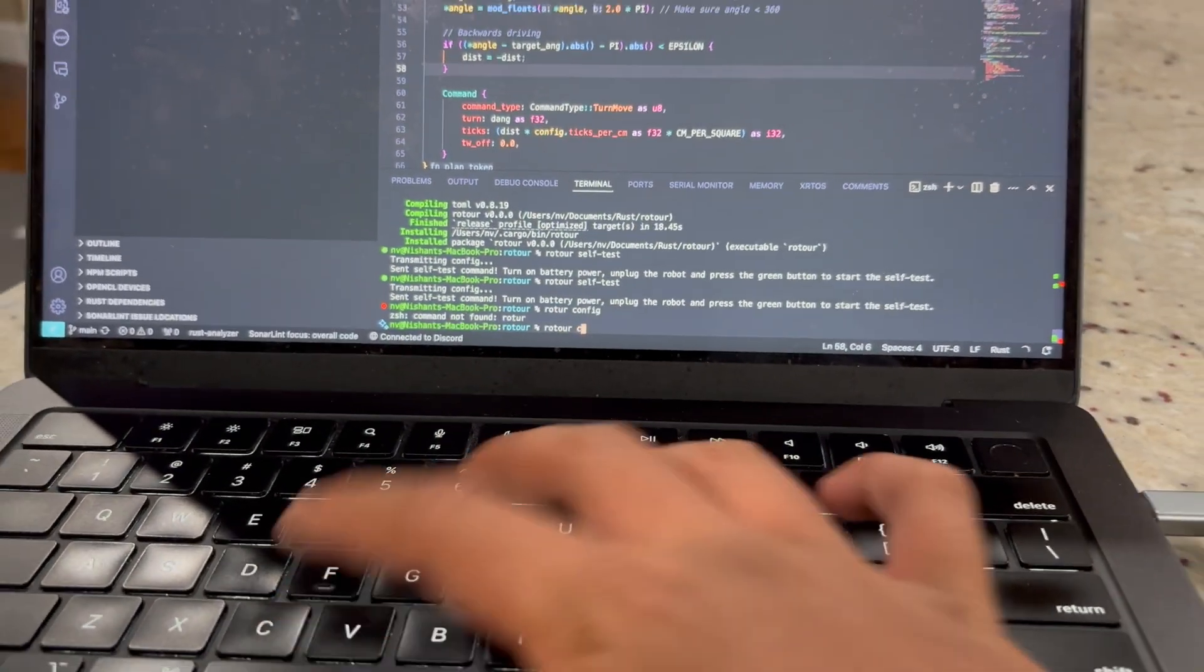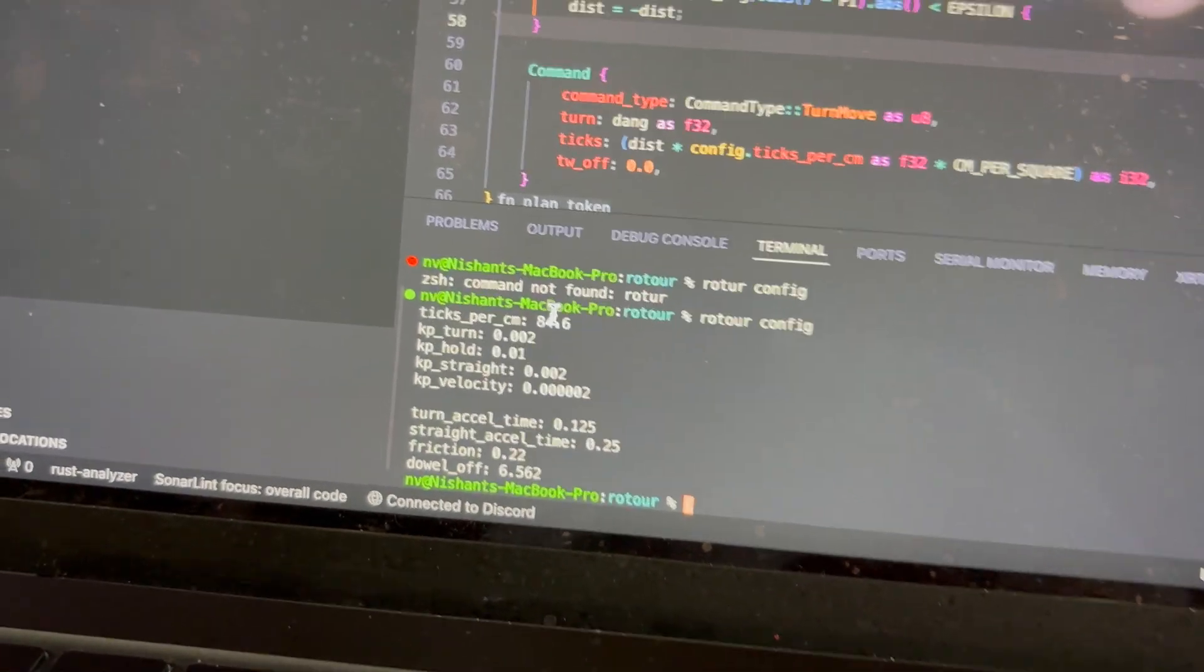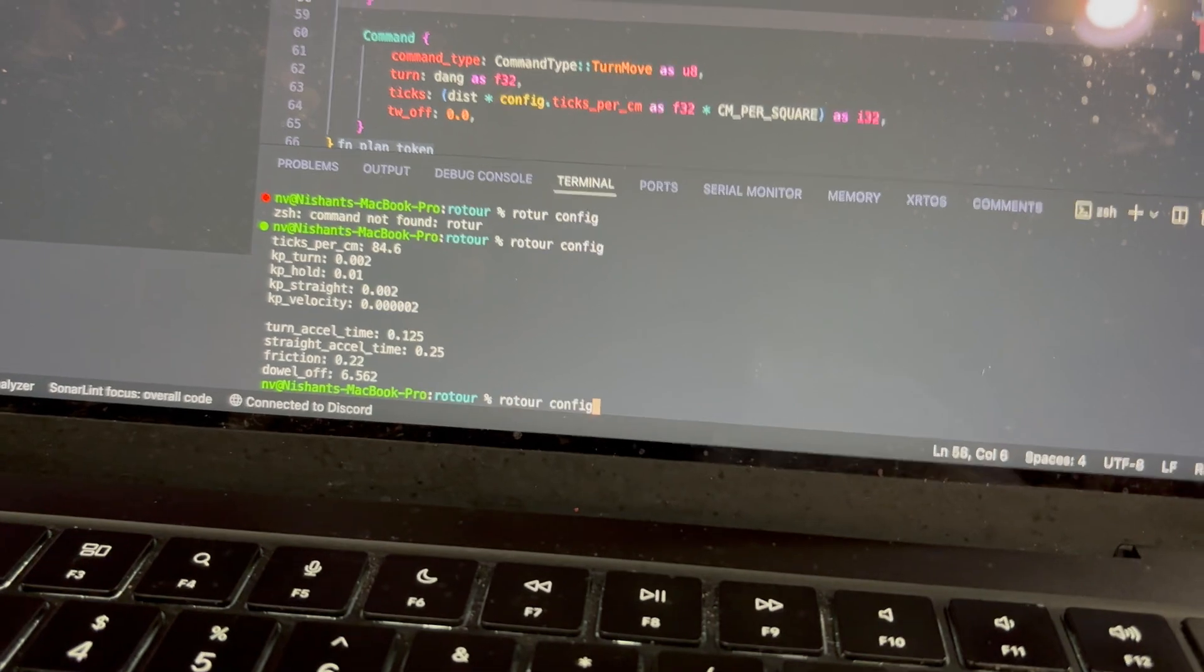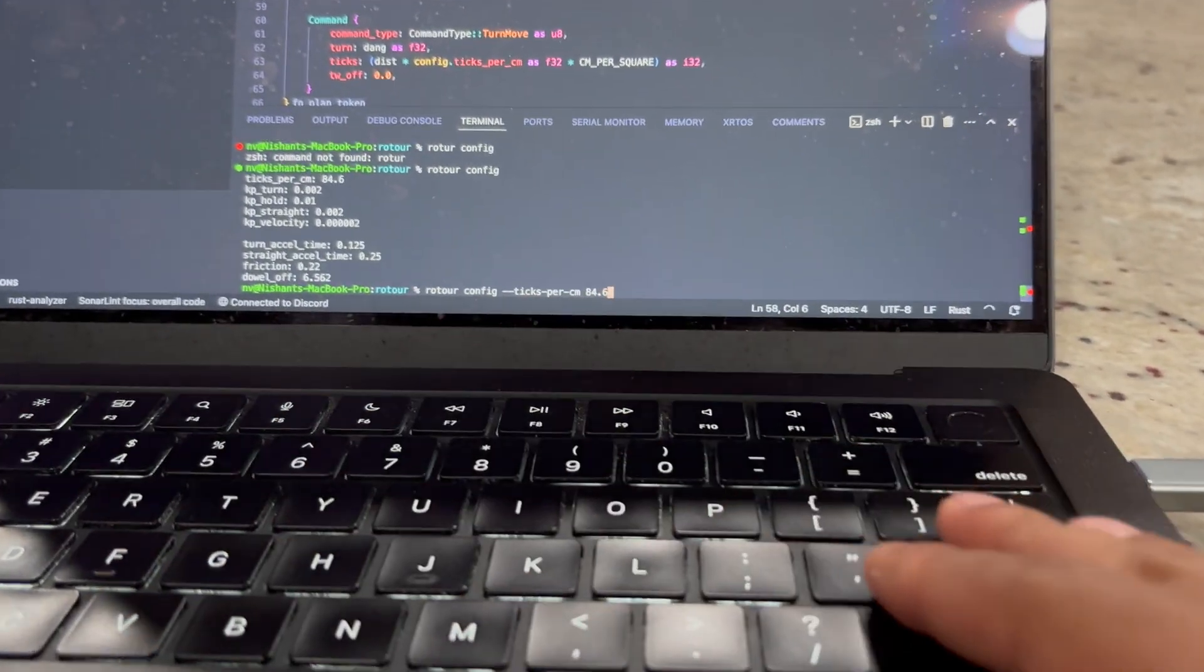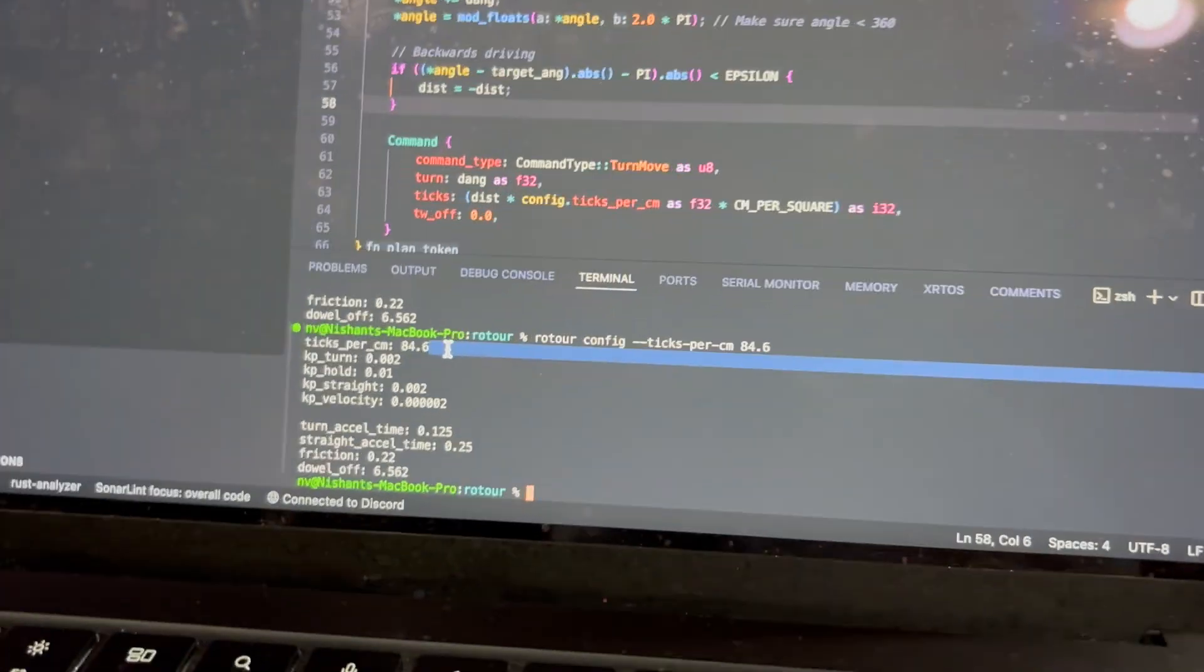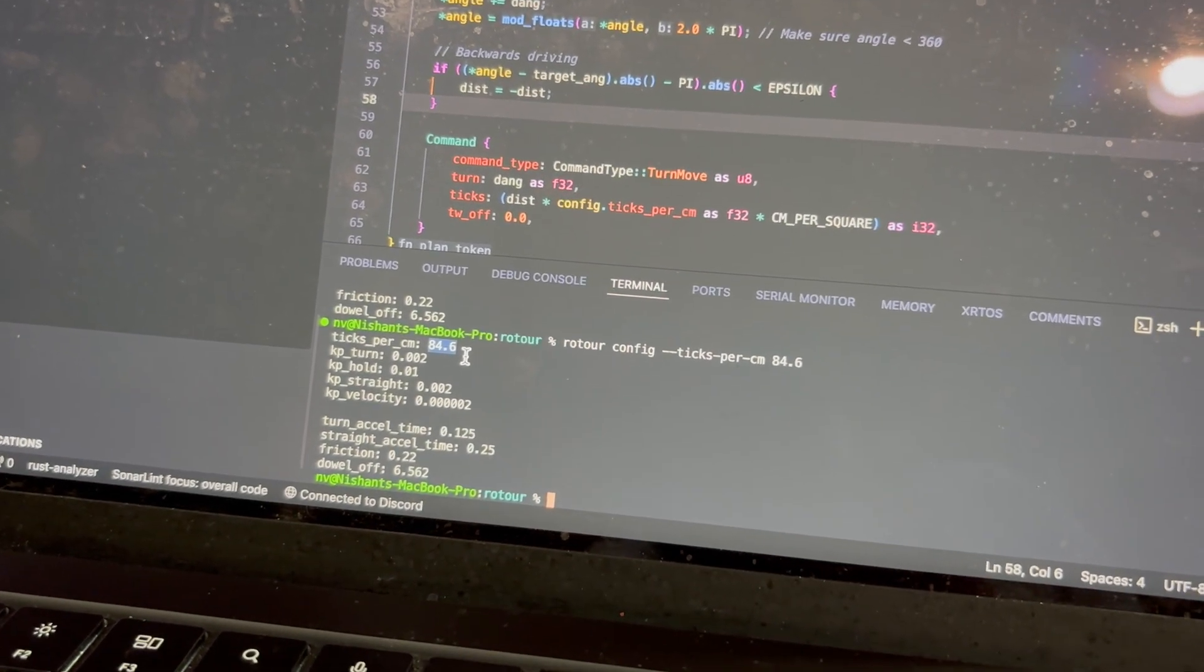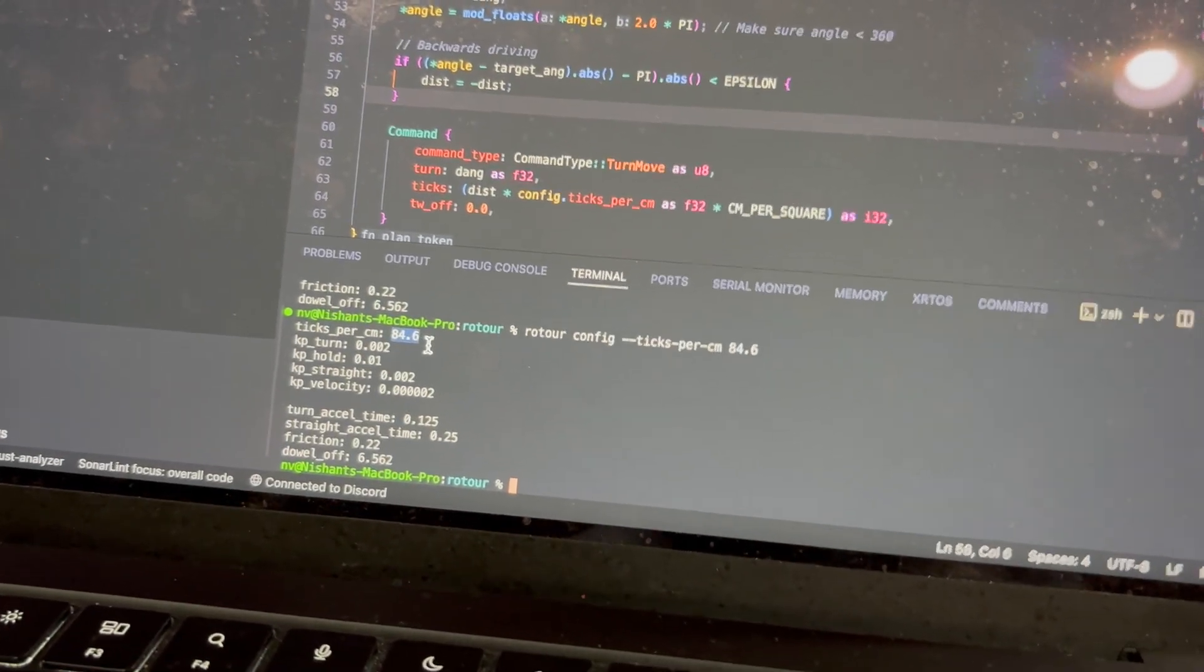Just measure how far it's gone. And essentially, now, if you run rotor config, you'll see that one of the numbers here is ticks per cm. So, you basically just take 10,000 and divide it by the number of centimeters it went to get the number of ticks per cm. And you just do dash dash ticks per cm. And then you would put in, for example, 84.6 and hit enter. So I've found that it's about 84.6. So, unless yours is wildly different than this, it should be 84.6 on your robot, too, since you're using the same motors and wheels as me. And if it isn't, probably contact me because there's most likely something wrong with your robot.